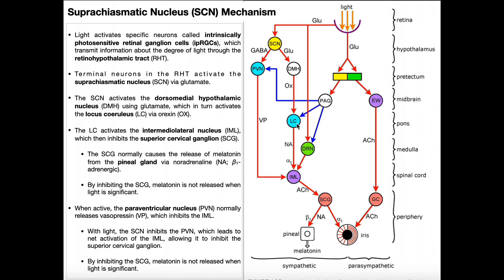We're at the locus coeruleus now. The locus coeruleus is going to activate the IML — the intermediolateral nucleus — via norepinephrine, or noradrenaline. That activation is through an alpha-1 adrenergic receptor on the IML, or intermediolateral nucleus, which activates the IML.